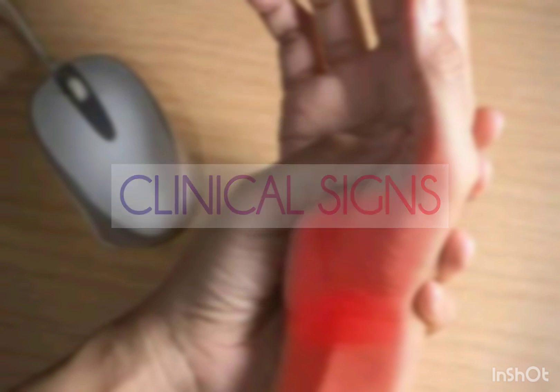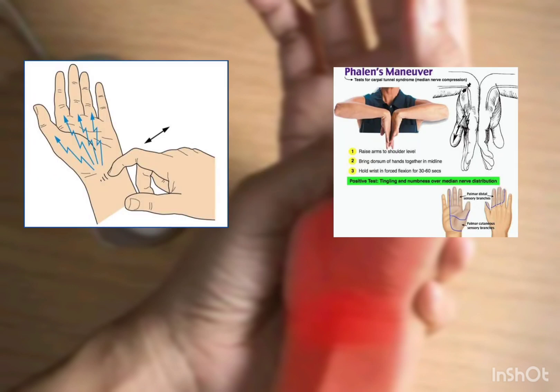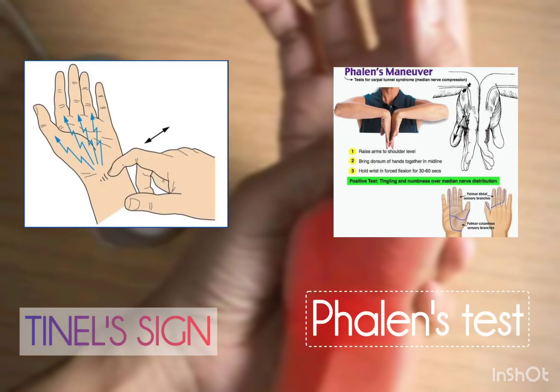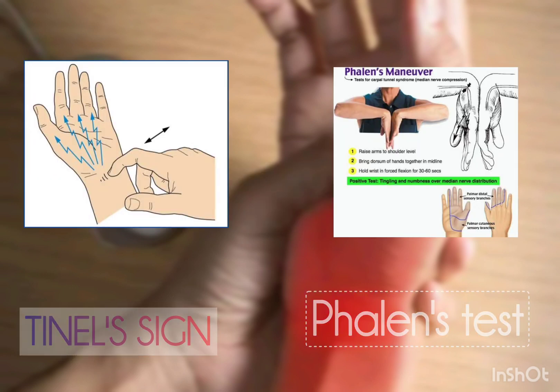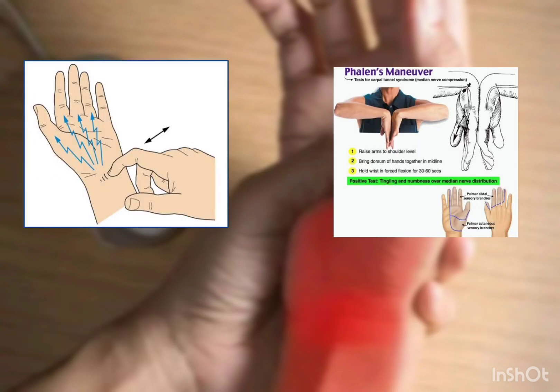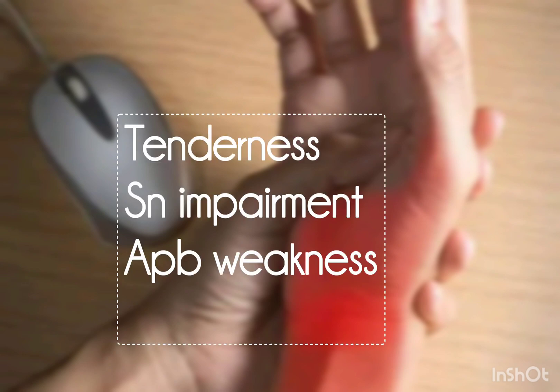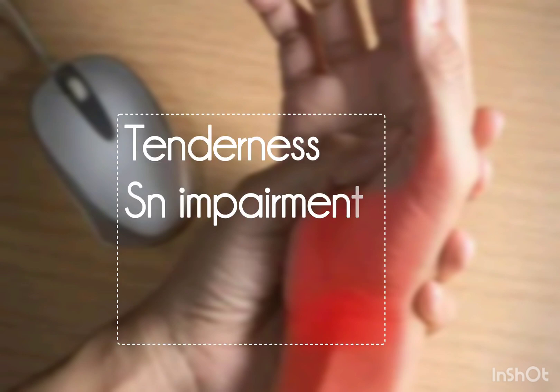Signs include Phalen's sign, Tinel's sign, and abductor pollicis brevis weakness, along with bruising, weakness, tenderness, sensory impairment, and other related findings.